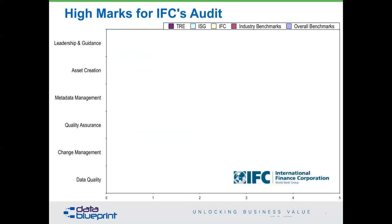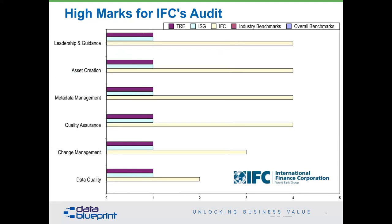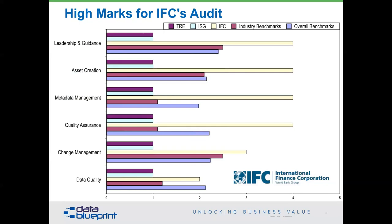The only organization whose specific results we'll discuss is the World Bank, one of the first groups to go through this process. We did three groups at once: their treasury function, their information systems group, and their business group — which turned out to have world-class practices. We could tell them: you don't need to look elsewhere for answers; just walk down the hall and ask your colleagues what they're doing. This process allows you to see not only how you compare to your industry and all industries, but also what's going on within your own organization that you may not know about.